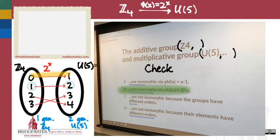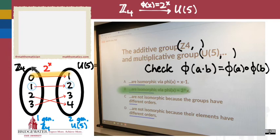If I wanted to check the product rule, what would I have to do? Two arbitrary elements A and B—φ(A) operated with φ(B). But keep in mind, these operations are different operations. The operation A·B is happening in which group? The group on the left. What is the operation in Z4?